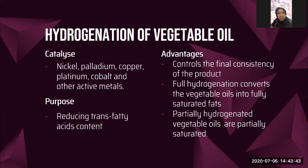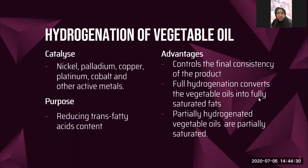The purpose of using active metals in hydrogenation is to reduce trans fatty acid content. The advantage of hydrogenation of vegetable oil is that it can control the final consistency of the product. Full hydrogenation converts vegetable oils into fully saturated fat. Partially hydrogenated vegetable oils are partially saturated — for example, margarine and shortening, which are partially hydrogenated and appear in solid form at room temperature.